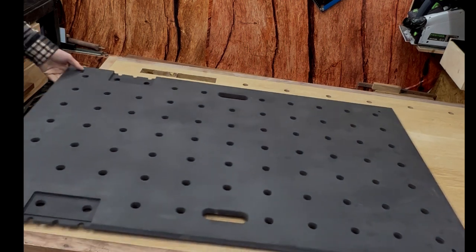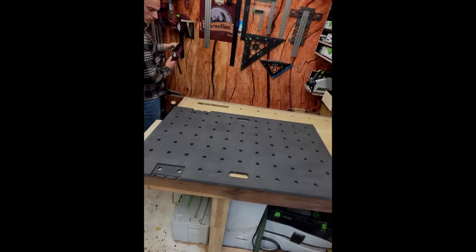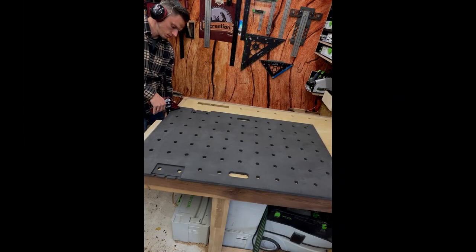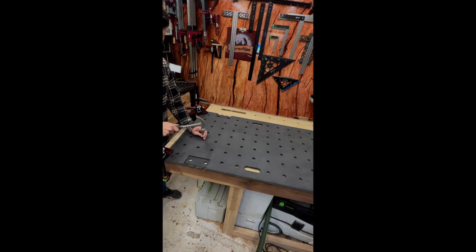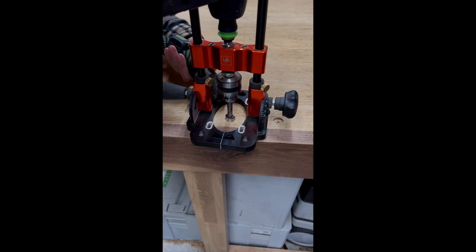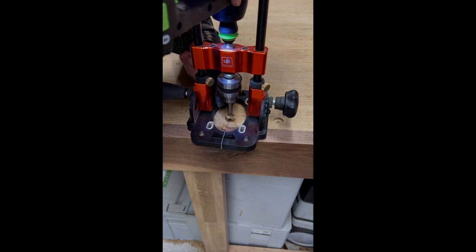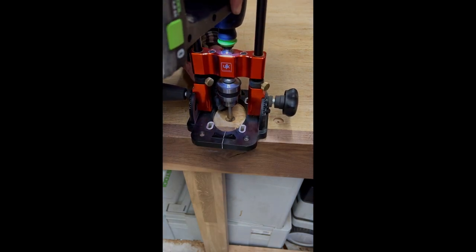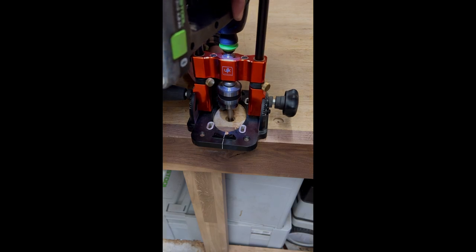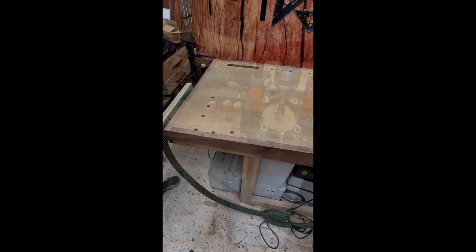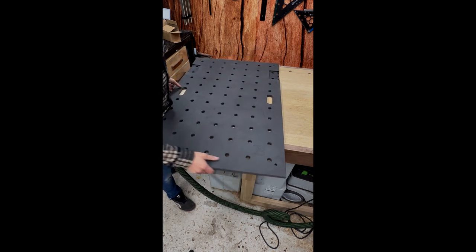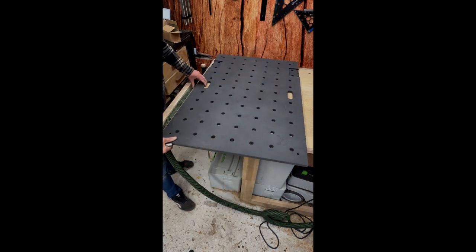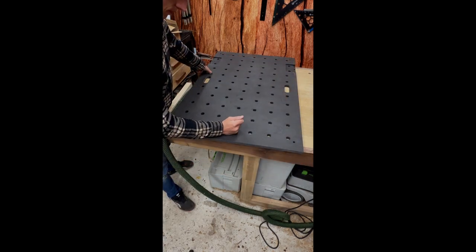So I laid down my MFT top on my workbench and then I clamped it down, took a 20 millimeter Forstner bit, and then I drilled out some holes. I used this drill stand for that which makes it a little bit more easy.